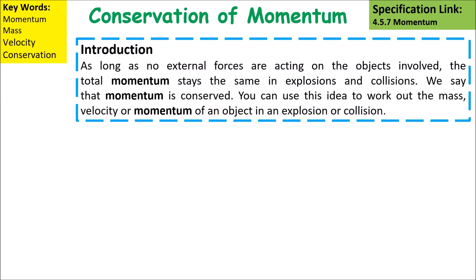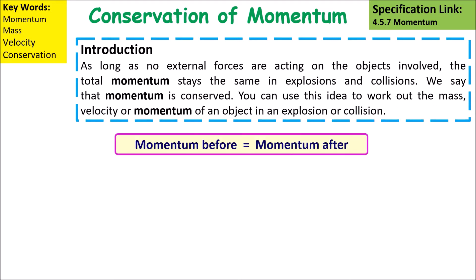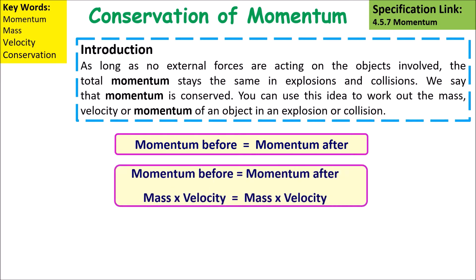As long as there are no external forces acting on the objects involved, the total momentum stays the same in explosions and collisions — we say that momentum is conserved. You can use this idea to work out mass and velocity before or after a collision or explosion. The momentum before is equal to the momentum after: mass times velocity before equals mass times velocity after.